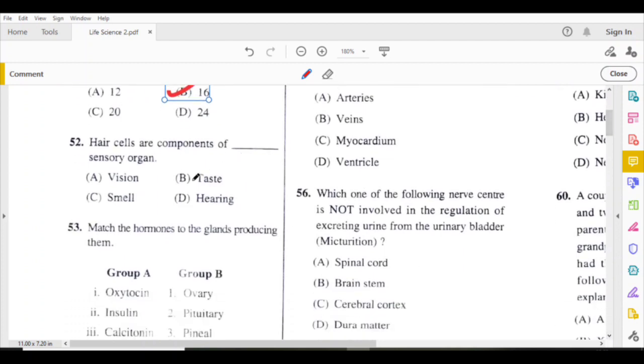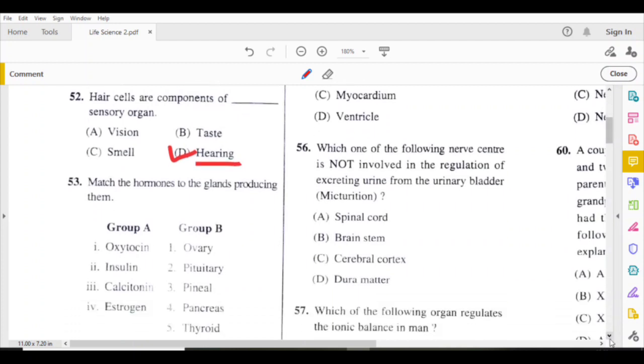Hair cells are components of hearing sensory organ. These hairs are inside the ear, present on the inner ear eardrum.